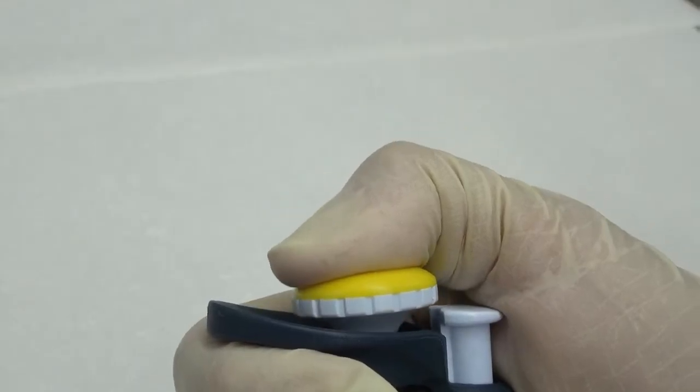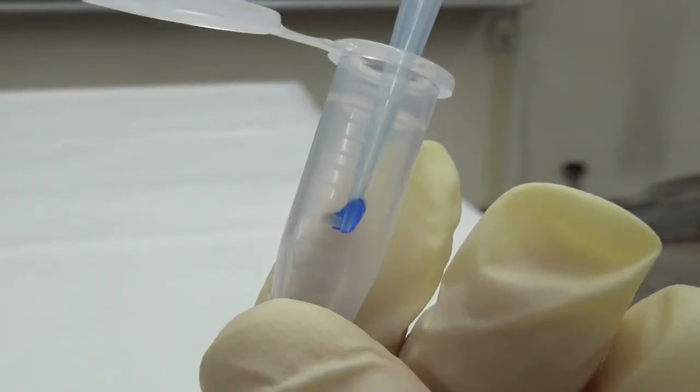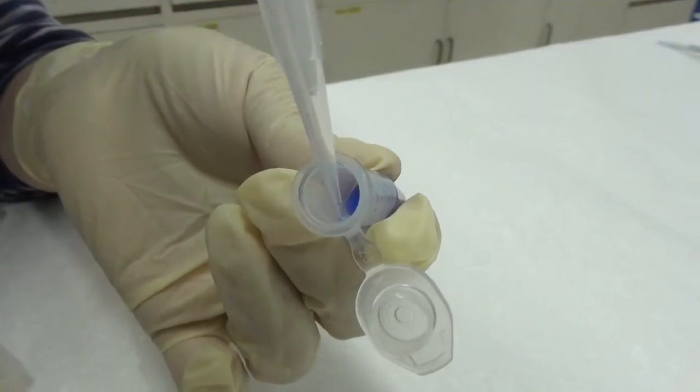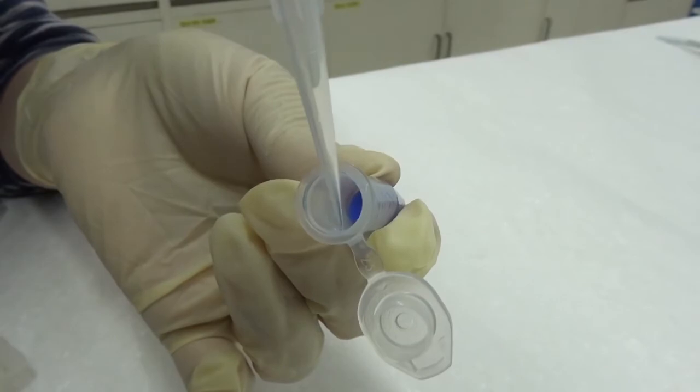Thus, press the operating button to the second stop to blow out the residual liquid. Remove the tip from the vessel, sliding it along the inner wall of the vessel.